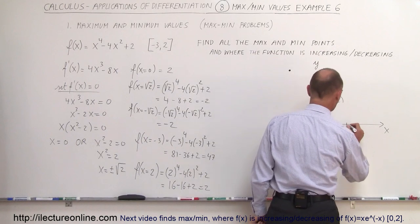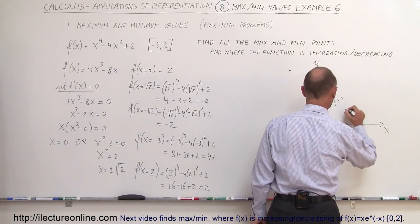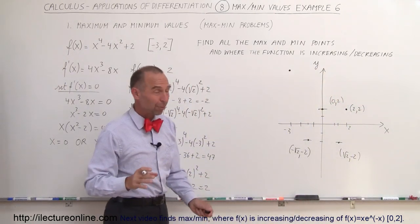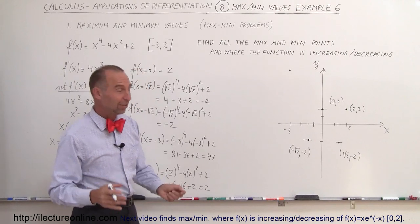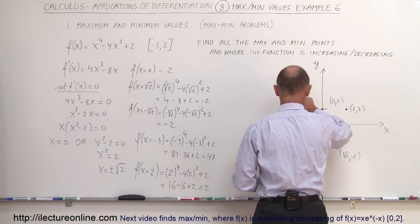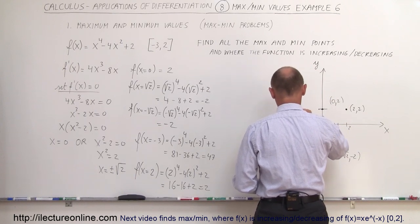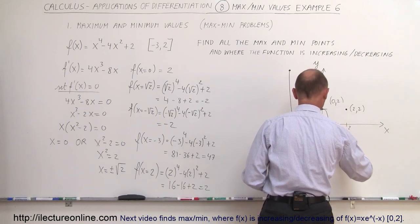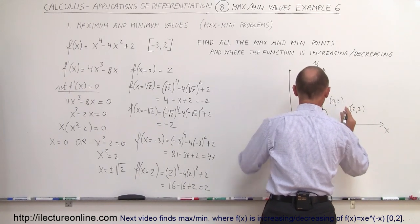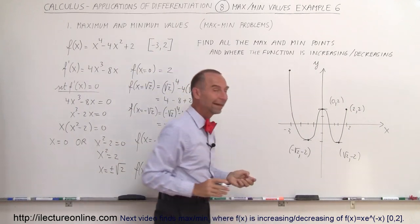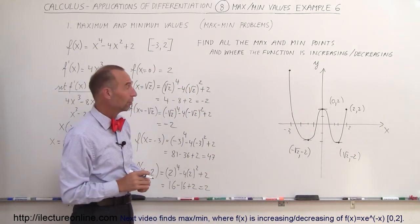Coming back to the graph: when x equals 2, y equals 2, which is that end point at (2, 2). Now that we have all 5 points on the graph, it's fairly easy to sketch the equation — it comes down here, we have a minimum value, here a maximum value, here another minimum value, and it comes back over here. That's the interval from minus 3 to 2 for that function, and now we can find the maximum and minimum points.